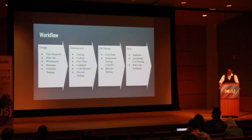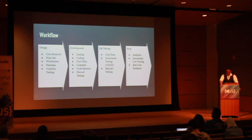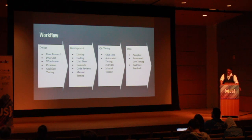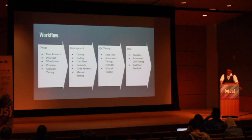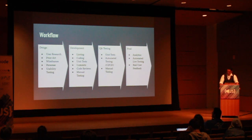We should be checking for accessibility issues at every step in our workflow. I'm going to focus mainly on the development stage of the process — the linting, coding, unit tests, commits, code reviews, and manual testing, with some reference to some of the other stages. If you're using React, you should be able to implement all of this. Other frameworks may or may not have the same packages available right now.